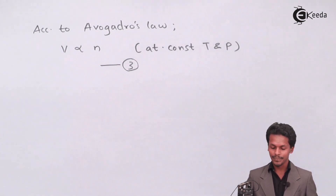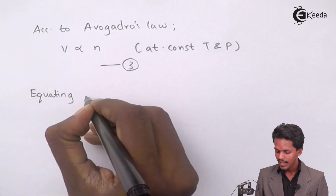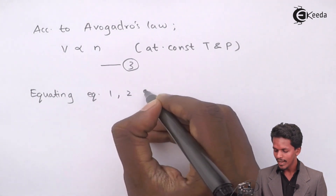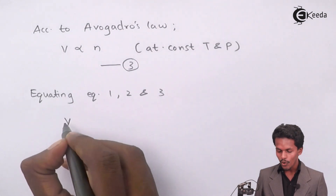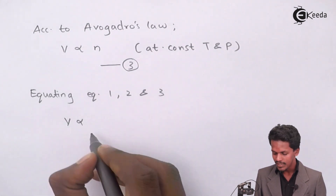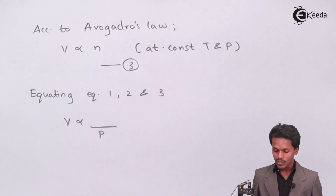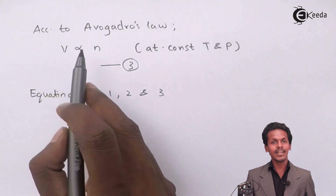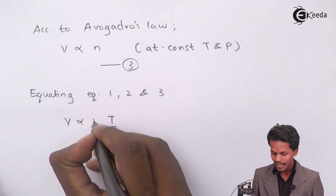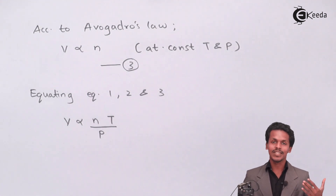Now we are equating all three equations — Equation 1, 2, and 3. From Boyle's Law, volume is inversely proportional to pressure. From Charles' Law, volume is directly proportional to temperature. From Avogadro's Law, volume is directly proportional to n. This is the combined relation we get by equating all three equations.